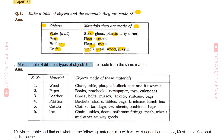Question 9: Make a table of different types of objects made from the same material. Wood: chair, table, plough, bullock cart and its wheels. Paper: books, notebooks, newspaper, toys, calendars. Leather: shoes, belts, purses, jackets, suitcase, bag. Plastics: buckets, chairs, tables, bags, briefcase, lunchbox. Cotton: clothes, bandage, bed sheets, cushions, bags. Iron: chairs, tables, doors, bathroom fittings, mesh, wheels, and other railway goods.